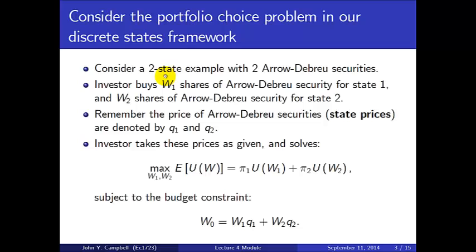We'll consider an example with two states of the world in the next period and two Arrow-Debreu securities, so markets are complete. The investor buys W1 shares of the Arrow-Debreu security for state 1 and W2 shares for state 2. Since each security pays $1 in its respective state, the investor ends up with W1 dollars in state 1 and W2 dollars in state 2. State prices are written with little q: q1 for the first security and q2 for the second.